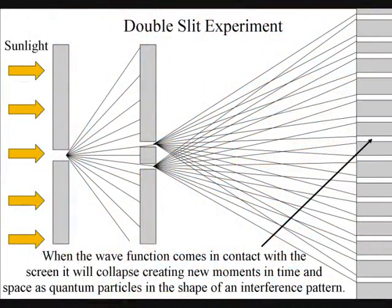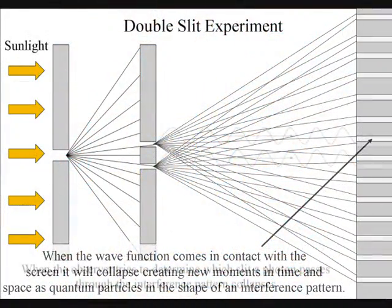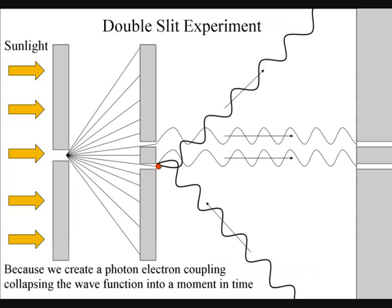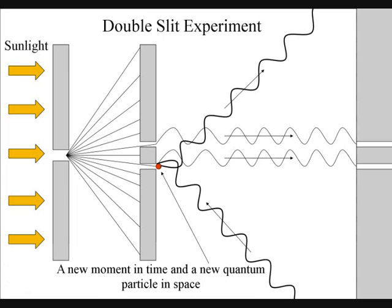When the observer tries to determine which slit a photon passes through, the interference pattern collapses. This is because to observe the photon, we have to create a photon-electron coupling, collapsing the wave-function, creating a new moment in time and a new particle in space.